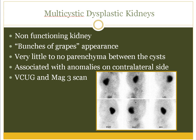Renal cystic dysplasia results from interference with normal ampullary activity, leading to abnormal metanephric differentiation. When inhibition of ampullary activity occurs at a very early stage, only few collecting ducts have been formed, and hence only few nephrons develop. The kidney becomes a cluster of cells with little or no residual parenchyma. Kidneys could be of normal size, larger as in MCDK (multi-cystic dysplastic kidneys), or markedly shrunken as in hypodysplastic kidney.